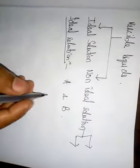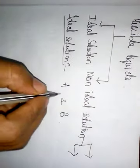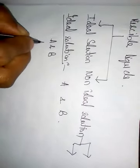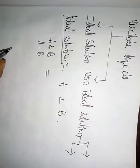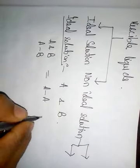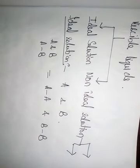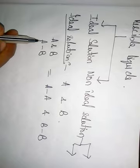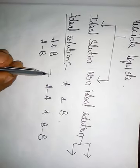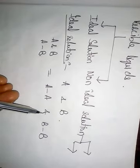An ideal solution is a solution of two components, say A and B. The mixture of liquids A and B is called an ideal solution if the intermolecular interactions between components A and B are of the same magnitude as the intermolecular interactions found in the pure components — that is, A-A and B-B interactions.